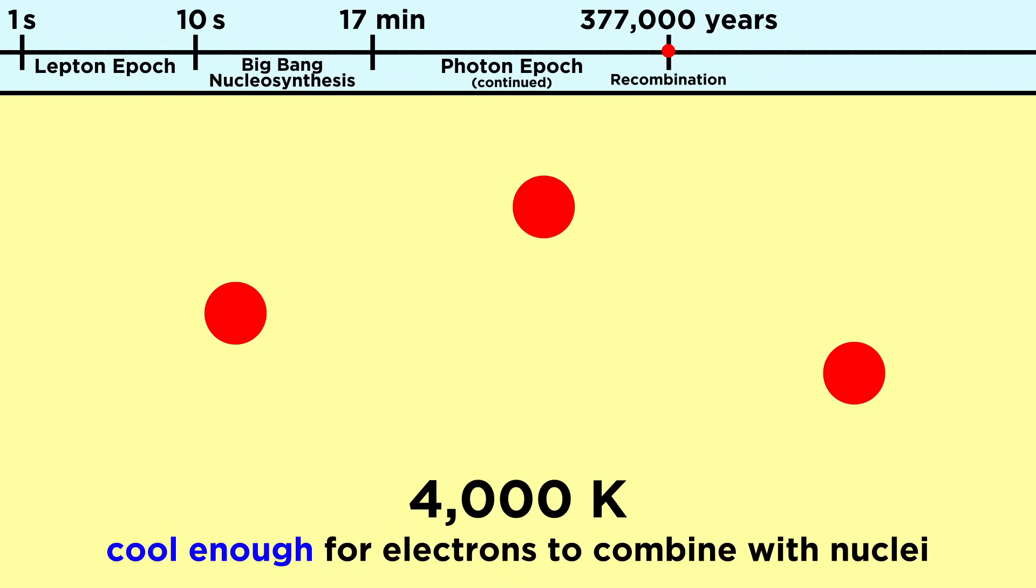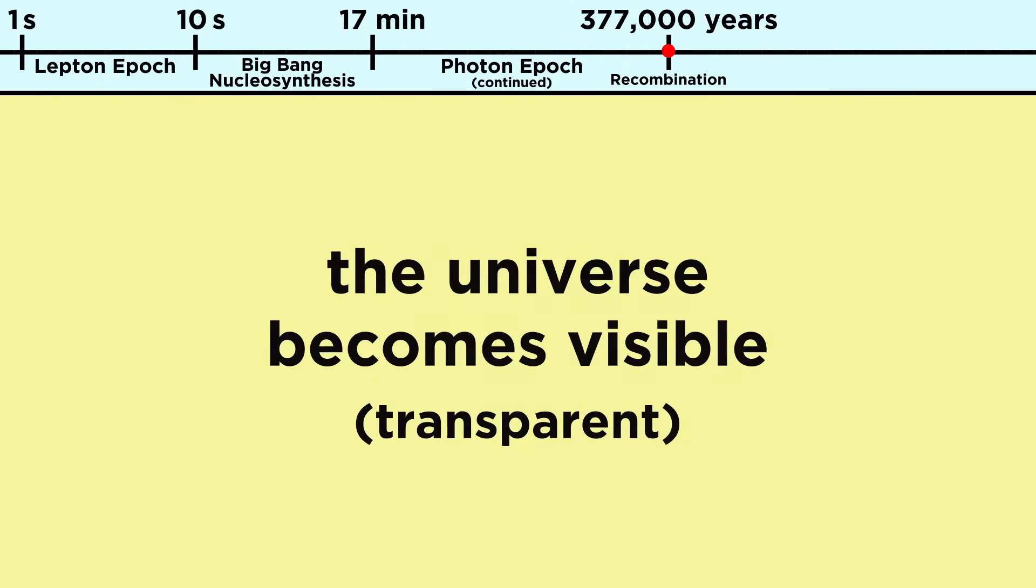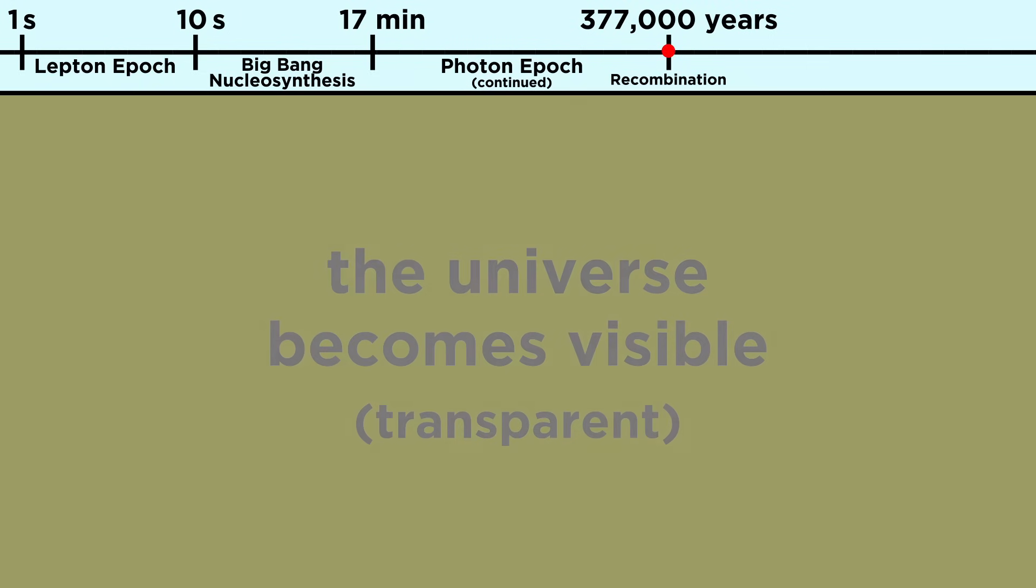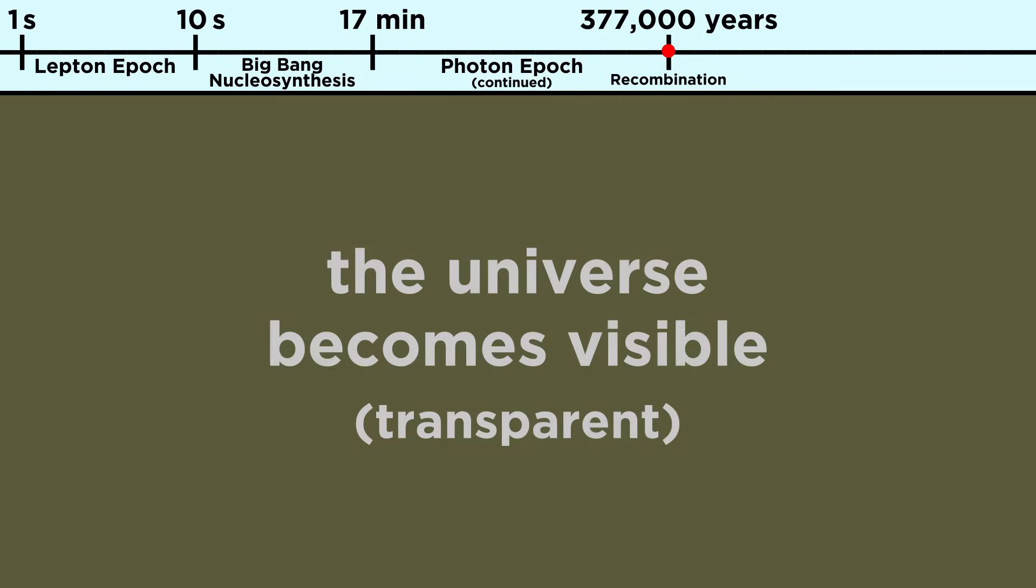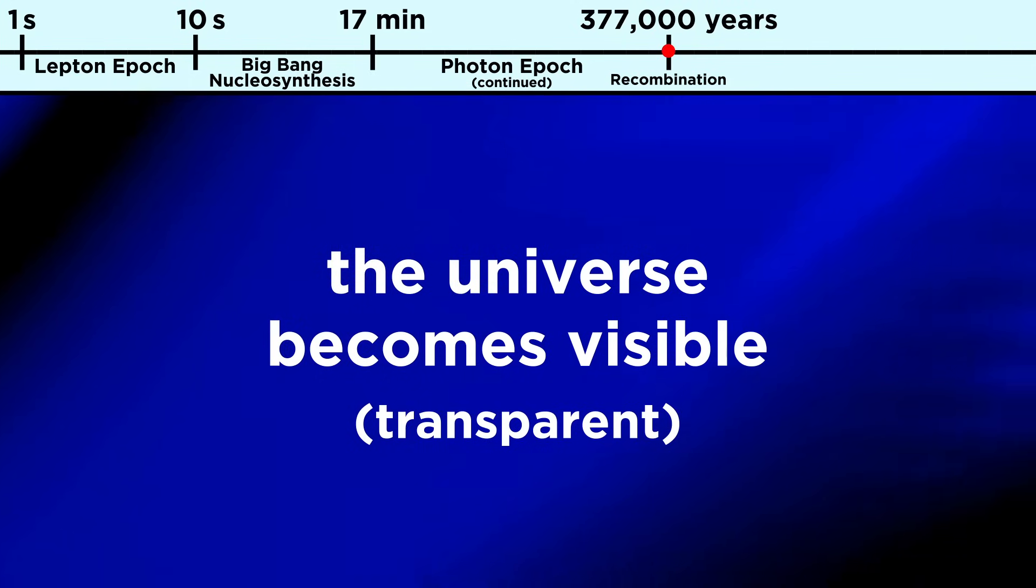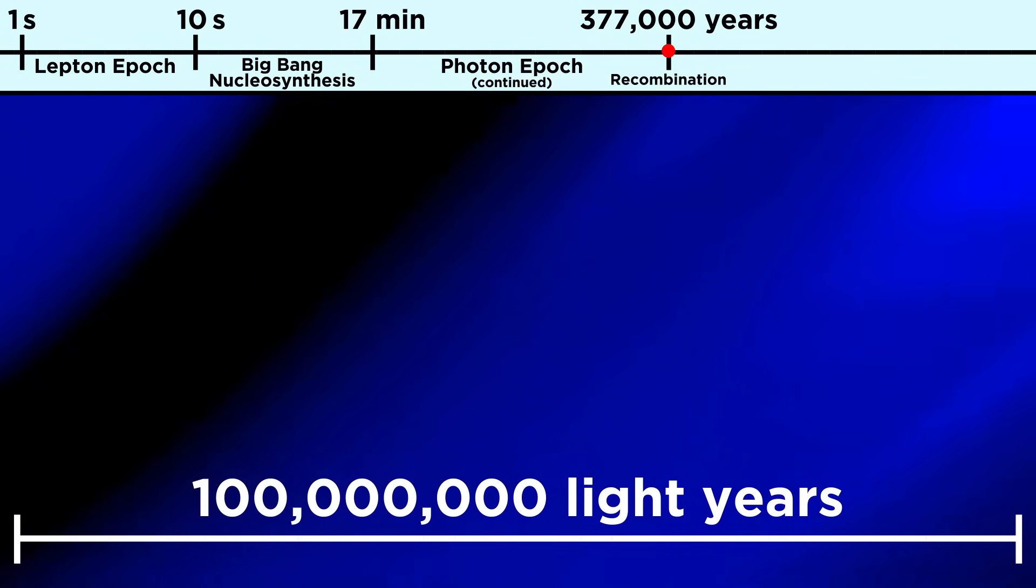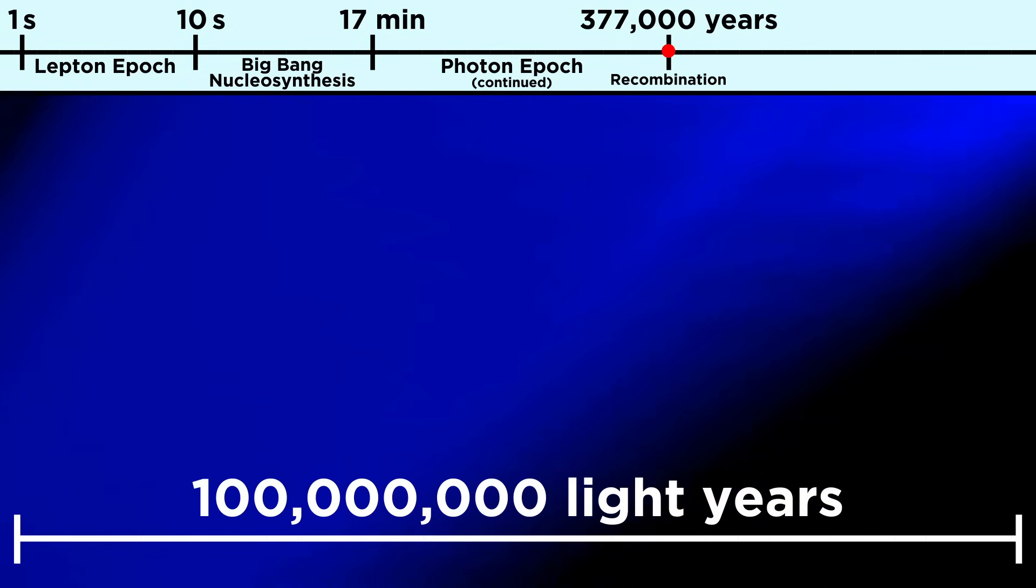During the next era, recombination and photon decoupling, about 377,000 years after the Big Bang, things are finally cool enough for electrons to combine with nuclei to form neutral atoms for the first time. Electrons are captured, relaxed down to the ground state, and emit photons in doing so. This marks the first time that the universe is actually visible, in the sense that we consider something to be visible to our eyes. It is no longer opaque, but transparent, with electromagnetic radiation now moving freely over large distances, and with a diameter for the universe of nearly one hundred million light years, the distances are large indeed.